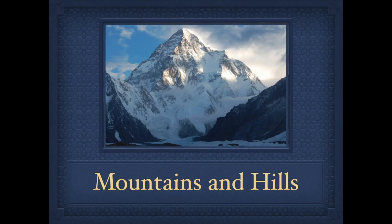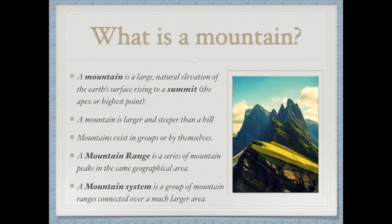Now we're moving into mountains and hills. A mountain is a large natural elevation of the earth's surface rising to a summit or apex — the highest point. Mountains are usually created from convergent boundaries or some sort of pushing together of the earth's surface. A mountain may even be formed into a volcano if magma is rising, pushing up the earth's crust.